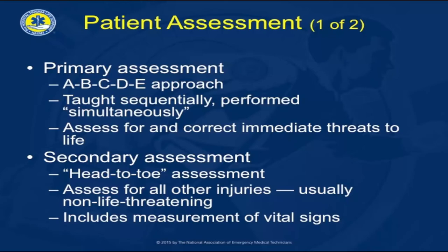For each patient, we want to do what's called a primary assessment — you may know that as a rapid trauma survey or rapid trauma assessment. We also want to do a secondary assessment, and we want to reassess our injuries and vital signs for the patient. In the patient assessment, the primary assessment uses the ABCDE approach, and even though we teach that in alphabetical order, a lot of times this is done simultaneously or with multiple people checking things at the same time. It is at this point that we want to assess and correct any immediate life threats — airway issues, ventilation issues, uncontrolled hemorrhage, and neurological impairment. Those things need to be fixed immediately if they're going to have an impact on the patient's life.